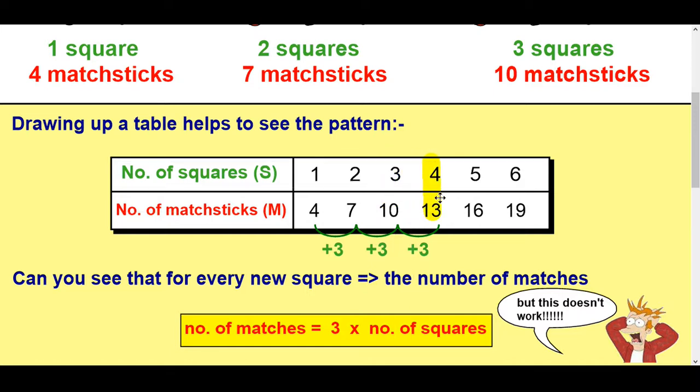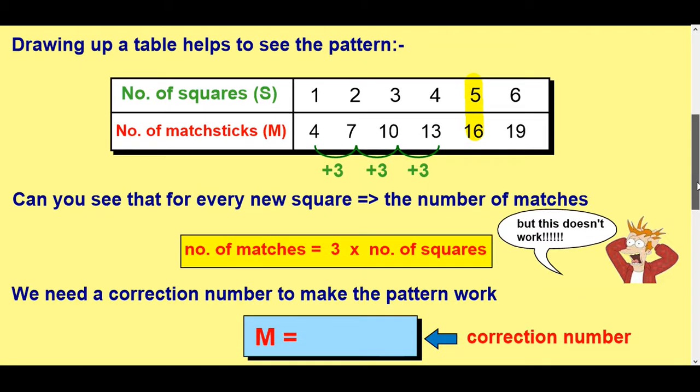Okay, it's almost there. It would get me to six, but I really need to get to seven. And if you look at this one, if I times by three, I'd get to nine, but I really need to get to ten. And if I times by three, I get to twelve, but I need to get to thirteen and so on.